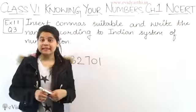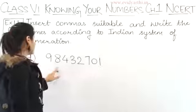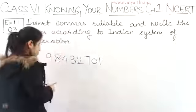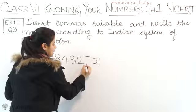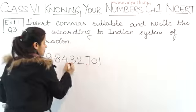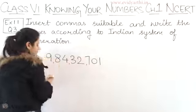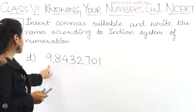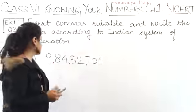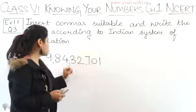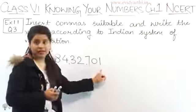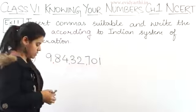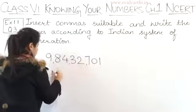Now coming to Part D. The number is 9, 8, 4, 3, 2, 7, 0, 1. Again we put commas - three digits first, then two digits, again two digits. The first number is 9. After 9, how many digits are there? One, two, three, four, five, six, seven - seven digits, which comes in crore. So this becomes 9 crore.